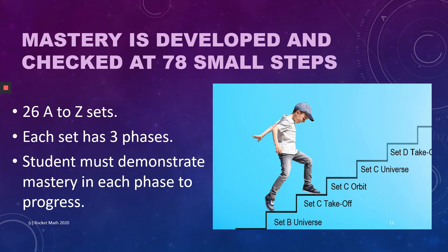After mastery of the universe phase of set B, the student goes to the takeoff phase of set C. When mastery is demonstrated there, they go into the orbit phase of set C. When mastery is demonstrated there, they go on to the universe phase of set C, and so on. Step by tiny step, students continue to be successful all the way.